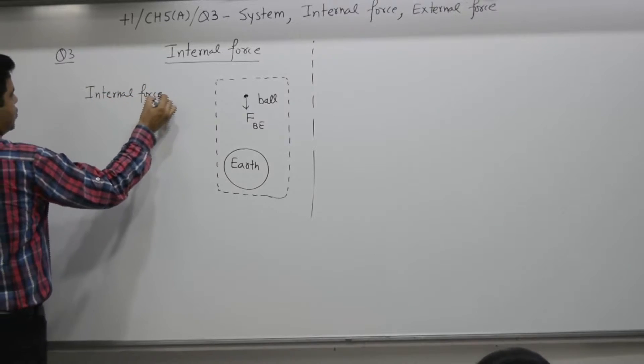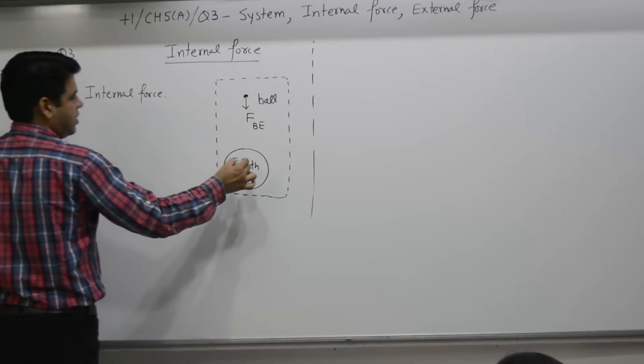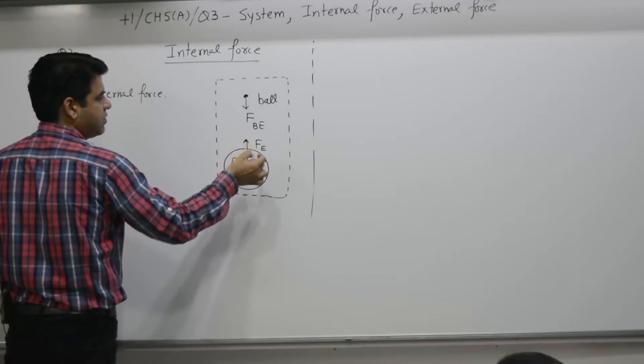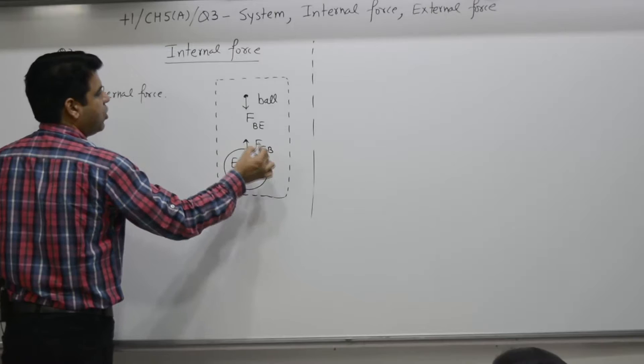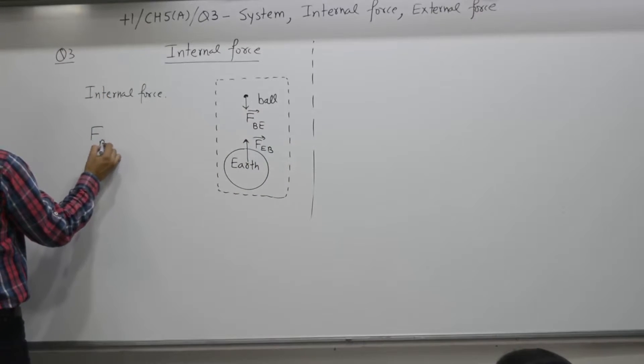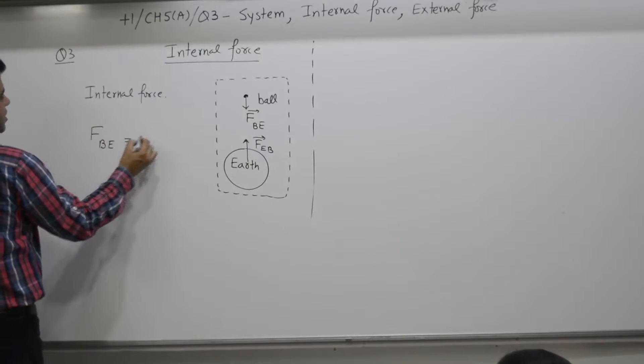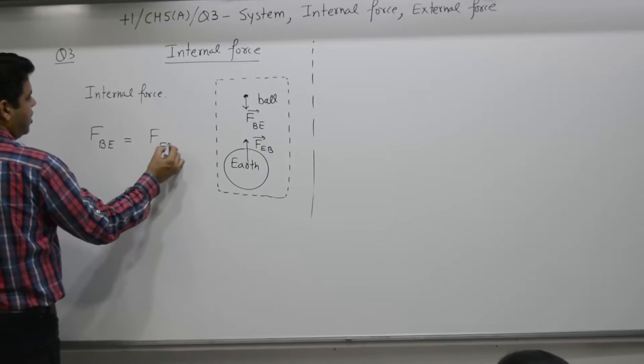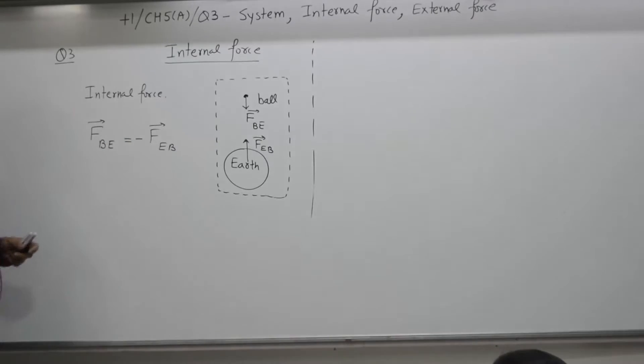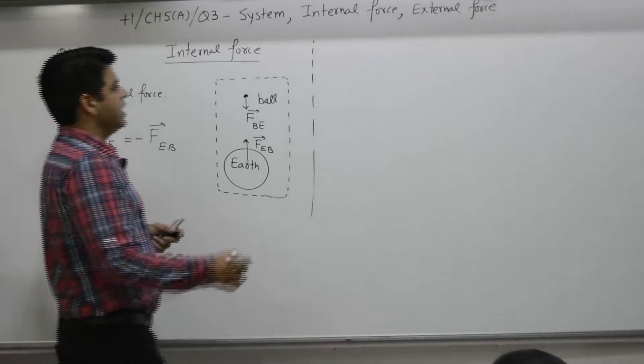One. Earth is also subjected to force. There is a force acting on earth due to the ball. These two forces, force on ball due to earth is equal to force on earth due to ball. Magnitudes of the two are the same, sign is opposite, direction is opposite. External.